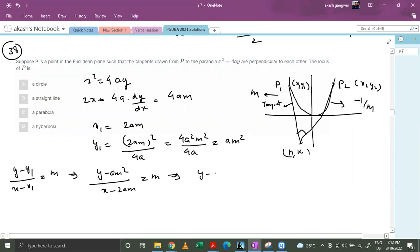On cross multiplying we get y minus am square equals to mx minus 2am square. Basically we got y equals mx minus am square. So this is the equation of tangent.